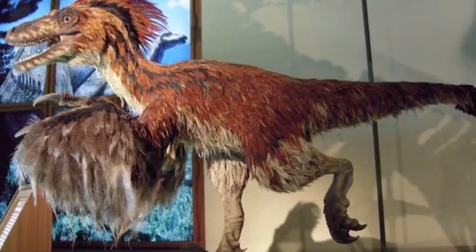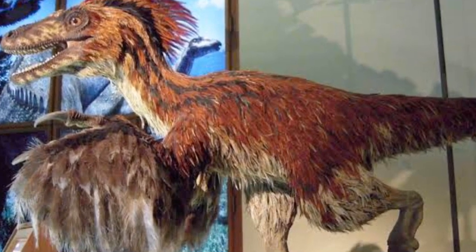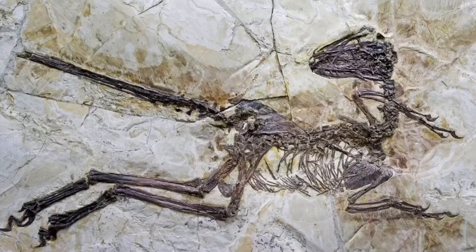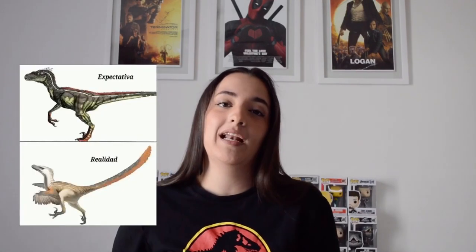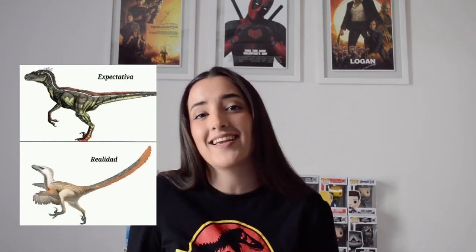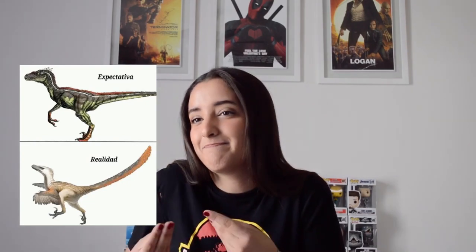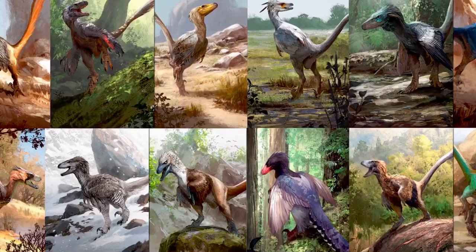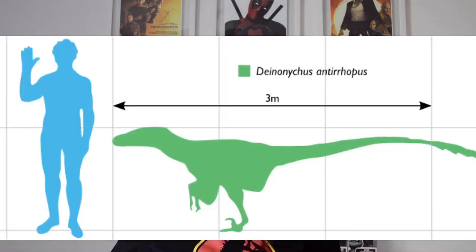Estas plumas les ayudaban a los raptors a mantener la temperatura en los días fríos y además a empollar los huevos. En los años 90, los paleontólogos creían que estos animales debían de estar cubiertos de plumas, cosa que a través de los años se ha confirmado, ya que muchas veces aparece fosilizada la pluma en los esqueletos de estos animales. Sin embargo, para la película se creyó que este plumaje le quitaría cierto atractivo y se vería menos peligroso. Otro error en el diseño de este animal es el tamaño: en la vida real ese animal no era más alto que un perro, pero podía llegar a medir hasta 2 metros de largo.